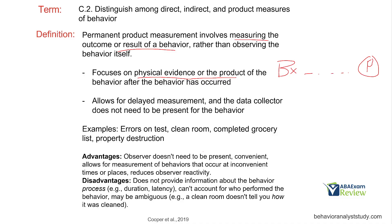Advantages of permanent product: the observer doesn't need to be present, which is always nice if you're limited on time or resources. It's convenient and allows for the measurement of behaviors that occur at inconvenient times or places. And it reduces observer reactivity — nobody's watching the behavior happening, but the behavior is still producing something we can measure. Disadvantages: it does not provide information about the behavior process — we're not going to know duration, latency, or magnitude, and we won't know ABCs because we're not there. We can't account for who performed the behavior; it may be ambiguous — a clean room doesn't tell you how it was cleaned. There's a time and a place for permanent product; it's up to you as the analyst to decide when.